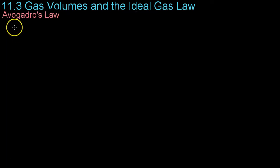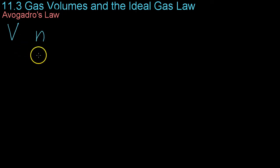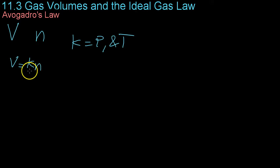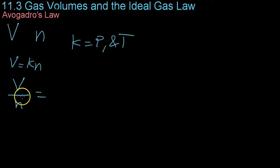Moving on now to Avogadro and his law about gas volumes. He discovered that there was a relationship between volume and the number of molecules in a gas — that for any given volume at a constant pressure and temperature, that volume was always occupied by the same number of molecules. That is, volume is proportional to the number of molecules present, or the volume per number of molecules is always some constant.